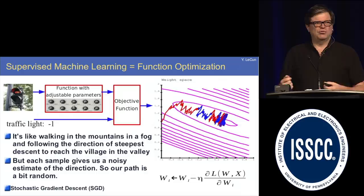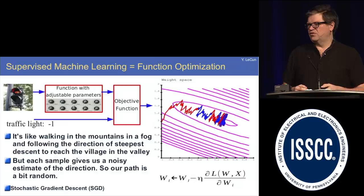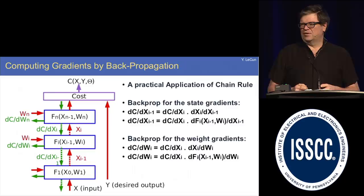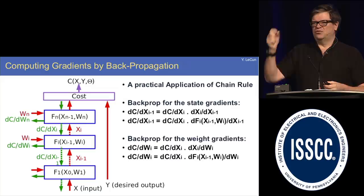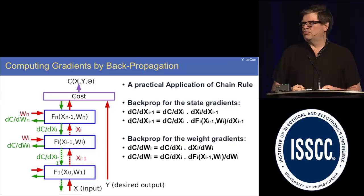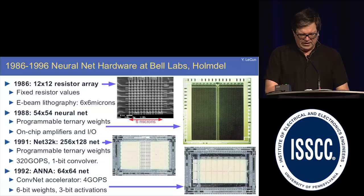You can train this using gradient descent — minimizing some objective function with respect to all the parameters, using stochastic optimization methods. To compute the gradient, you use the backpropagation algorithm, which consists in basically running the circuit backwards to propagate gradients. It's a practical application of the chain rule, so there's nothing really complicated in terms of mathematics. The idea has been around since the 60s, but for machine learning only since the mid-80s.